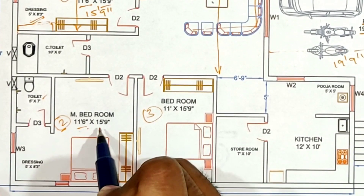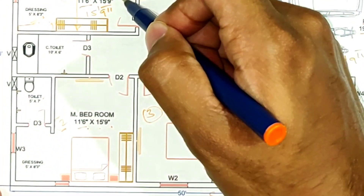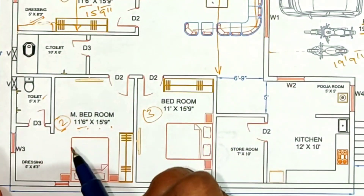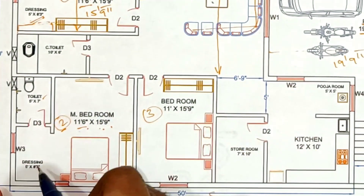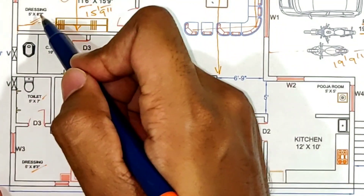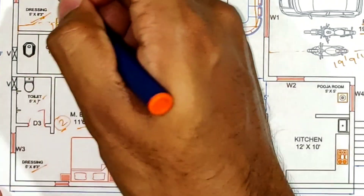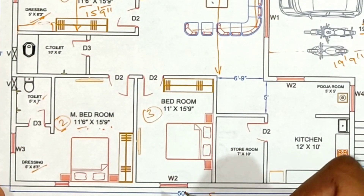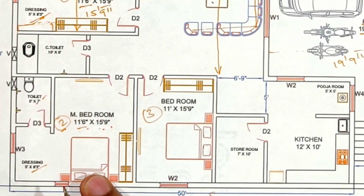The second master bedroom is also 11 feet 6 inches by 15 feet 9 inches. The dressing room is the same, and the toilet is also the same size.